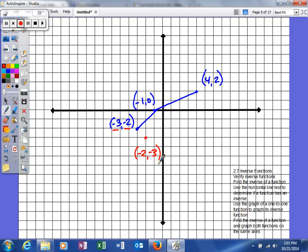The reason that makes sense is because, if you look, the x value for the original function becomes the y value of the inverse, and the y value of the original function becomes the x of the inverse.